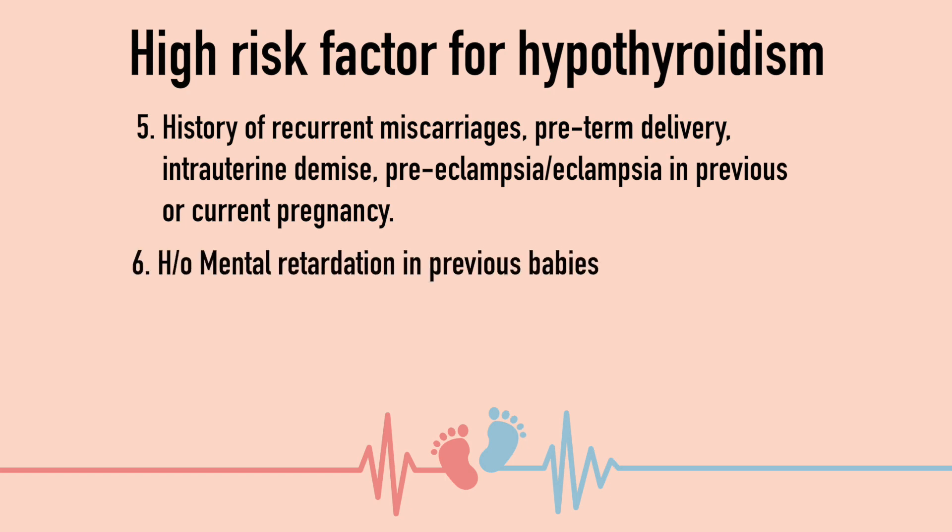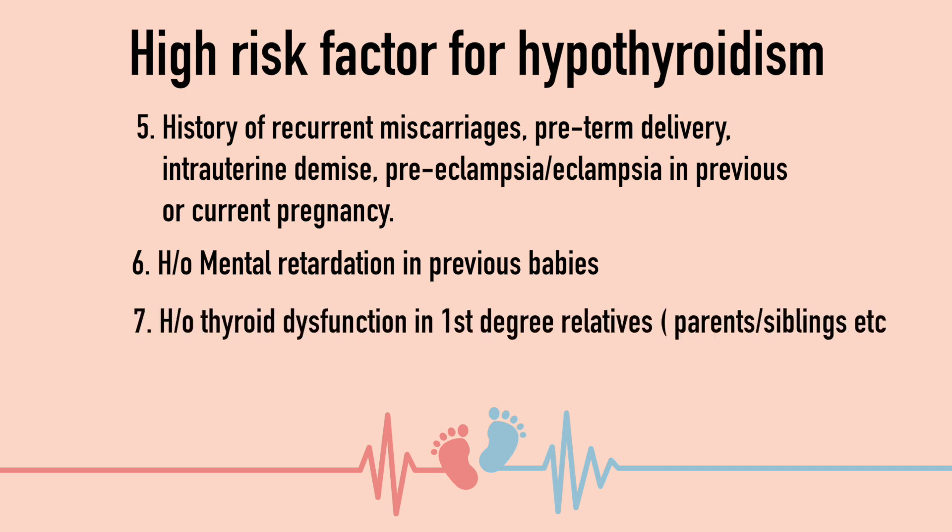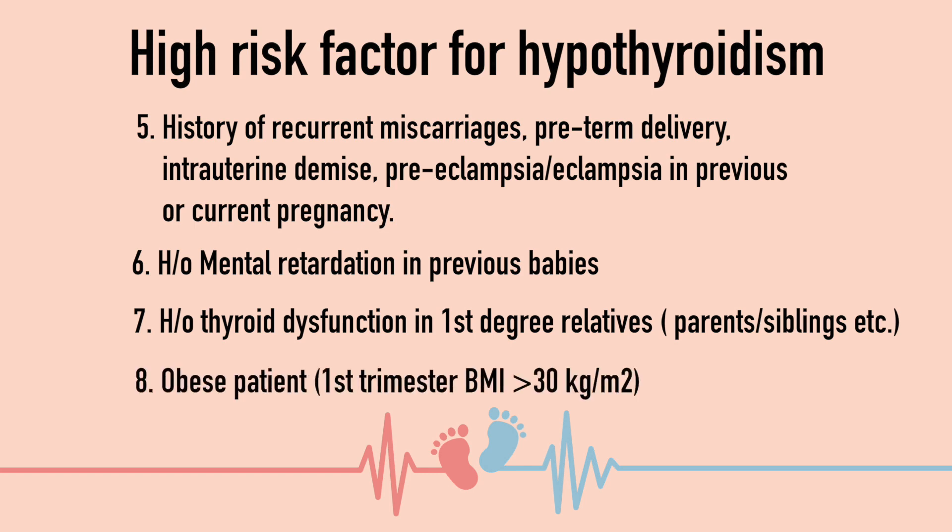Additional high-risk groups include: 6. History of mental retardation in previous babies of the same mother or in the family. 7. History of thyroid dysfunction in first-degree relatives such as parents, siblings, or children. 8. Obese patients — if the pre-pregnancy and first-trimester body mass index is more than 30 kg per metre square, the patient is considered obese. All these patients are considered at high risk for hypothyroidism in pregnancy.